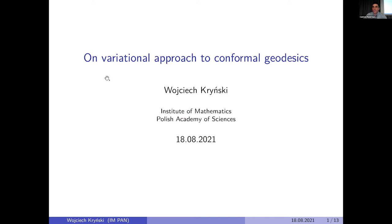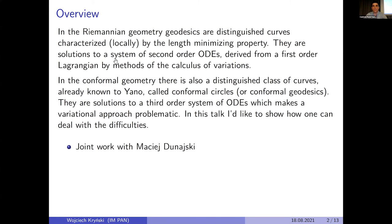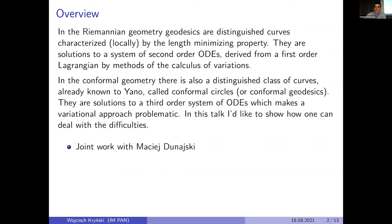Thank you for this opportunity of giving a talk here. I'm going to talk about conformal geometry, but let us start with the Riemannian case. In the Riemannian case, there is a class of distinguished curves, well known of course under the name of geodesics, which are locally length-minimizing curves. They are solutions to a system of second-order ODEs which comes from a Lagrangian that depends on first-order derivatives of the curve — a first-order Lagrangian.